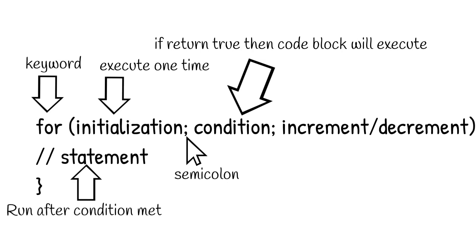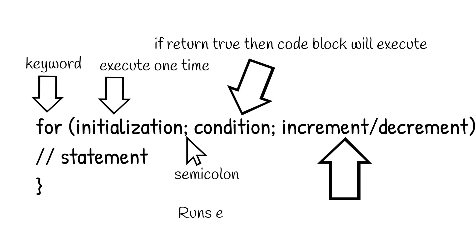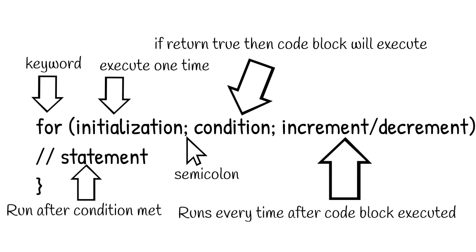After that, you increment or decrement the value based on your requirement. This third statement also executes every time. Then after incrementing or decrementing, the second statement — the condition — is checked again. Remember: initialization happens only once, but the condition and increment/decrement execute again and again with your code block as long as the condition is true.